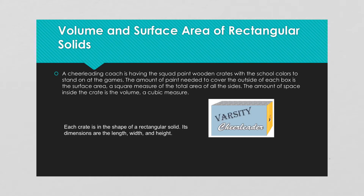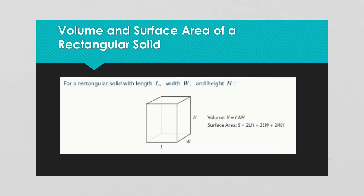The crate is in the shape of a rectangular solid — rectangular meaning that each face is a rectangle, and it's a solid, so there are six sides to it. To find the surface area of a rectangular solid, you have to find the area of each of the faces and add them up. But keep in mind that with solids, this side is the same as that back side back there.